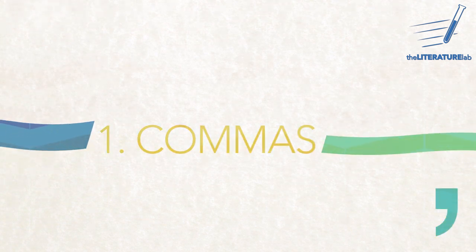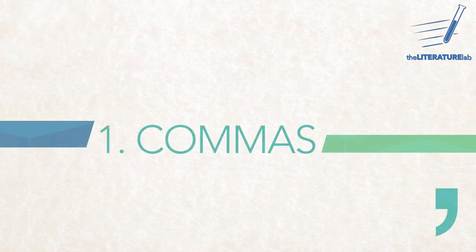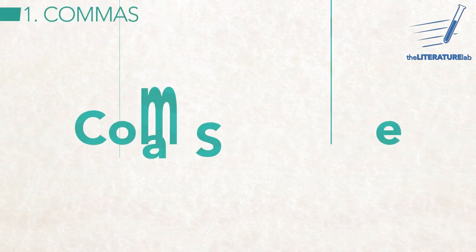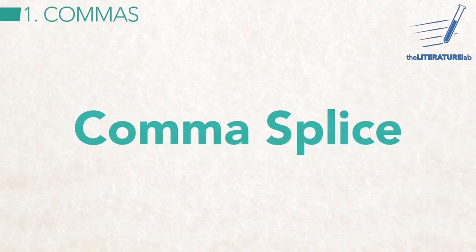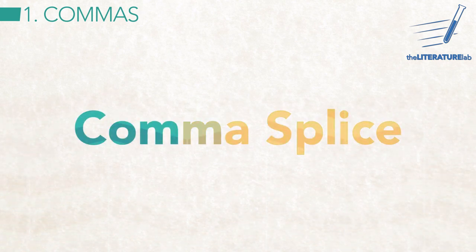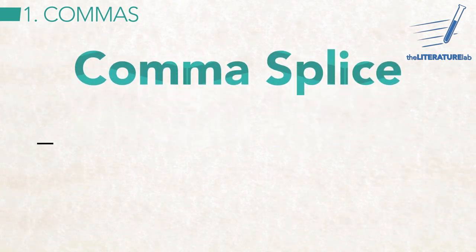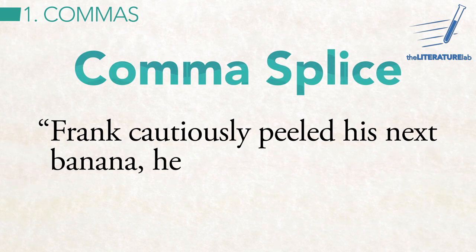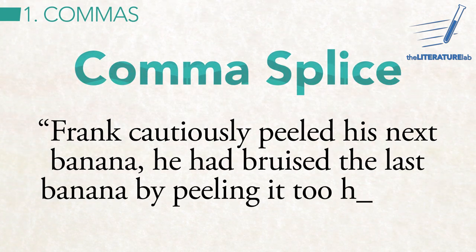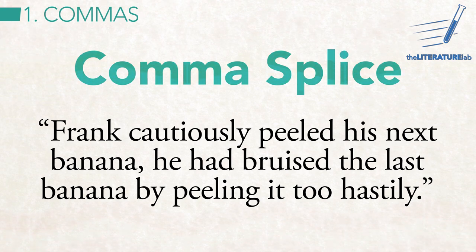Let's turn to the first of our ten most common grammar mistakes: errors involving commas. I mentioned the term comma splice earlier. What is that? Simply put, it's independent clauses — which are complete sentences — joined by a comma. This is actually two complete sentences, two independent clauses, spliced by a mere comma.